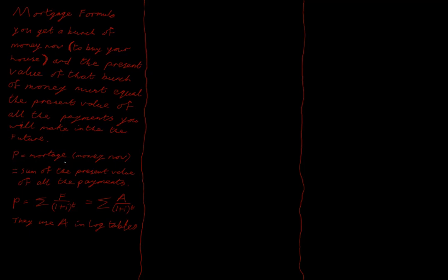P is going to be our letter for the mortgage money — the money we get used to buy our house. That's the money now, so P is the present value. That has to be equal to the sum of all the present values of the future payments. In your log tables they use A instead of F, so A is our normal future value, and we're going to sum up all of these future values and discount them using our compound interest formula.